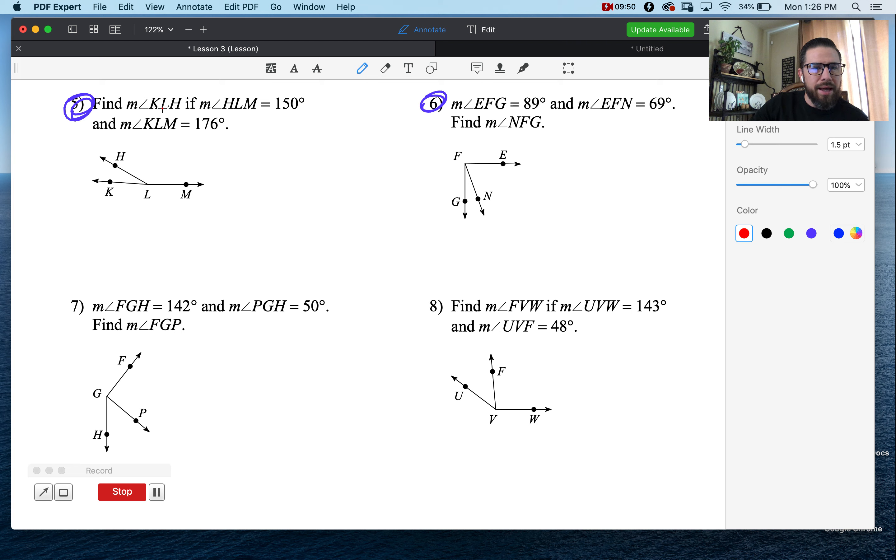All right. Let's get it. KLH. Find KLH. They want you to find the measure of angle KLH. KLH is right here. You can tell that that's a small piece. And they want you to find the small piece. Well, if they want you to find the small piece, don't we just do big minus small to find the other small piece? What's our big one? HLM is 150. Our other one's 176 for the entire thing. So let's subtract them. 176 minus 150. It looks like 26 degrees.